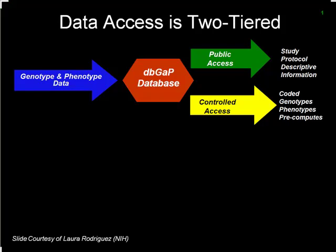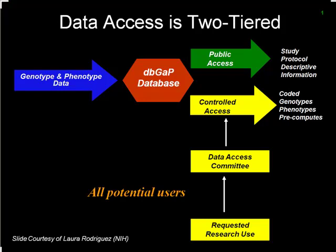The access to dbGaP is a two-tiered process. They create two levels: public access information — study information, protocol, descriptive statistics, general information — and behind a firewall, coded data including genotypes, phenotypes, and pre-computed statistics. To get access to the controlled-access data, you must submit a research request to a data access committee, which determines whether you get access.